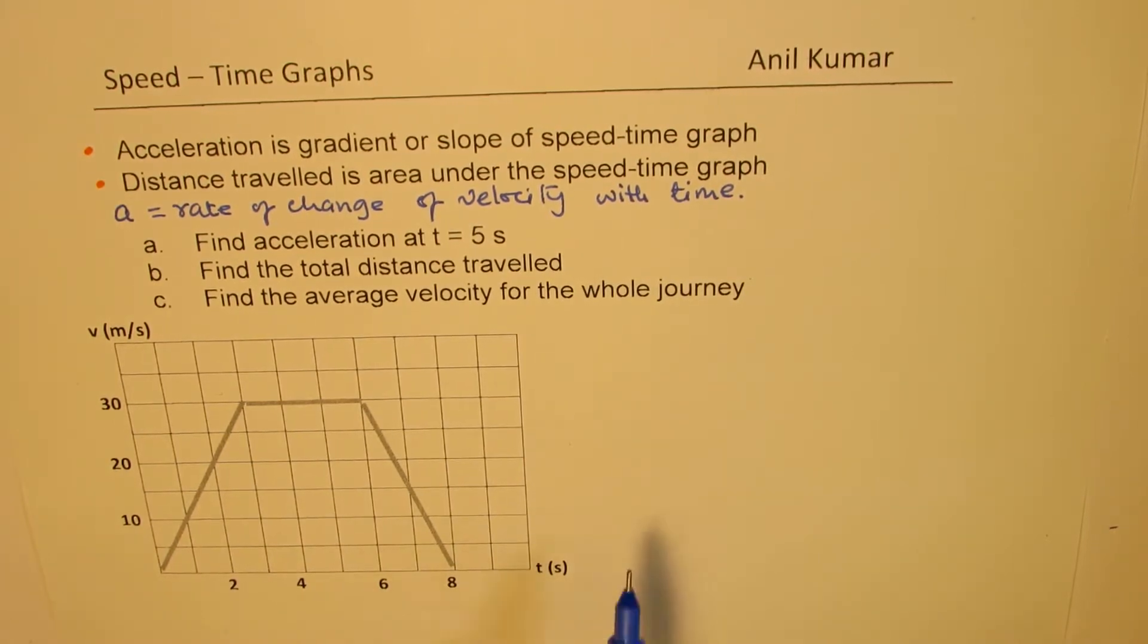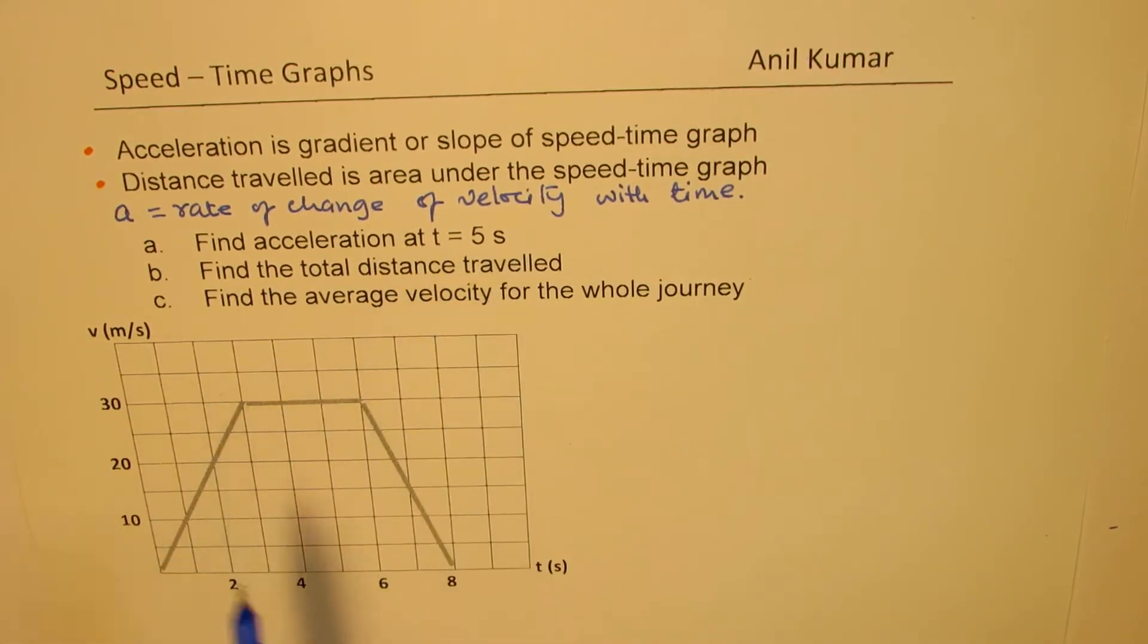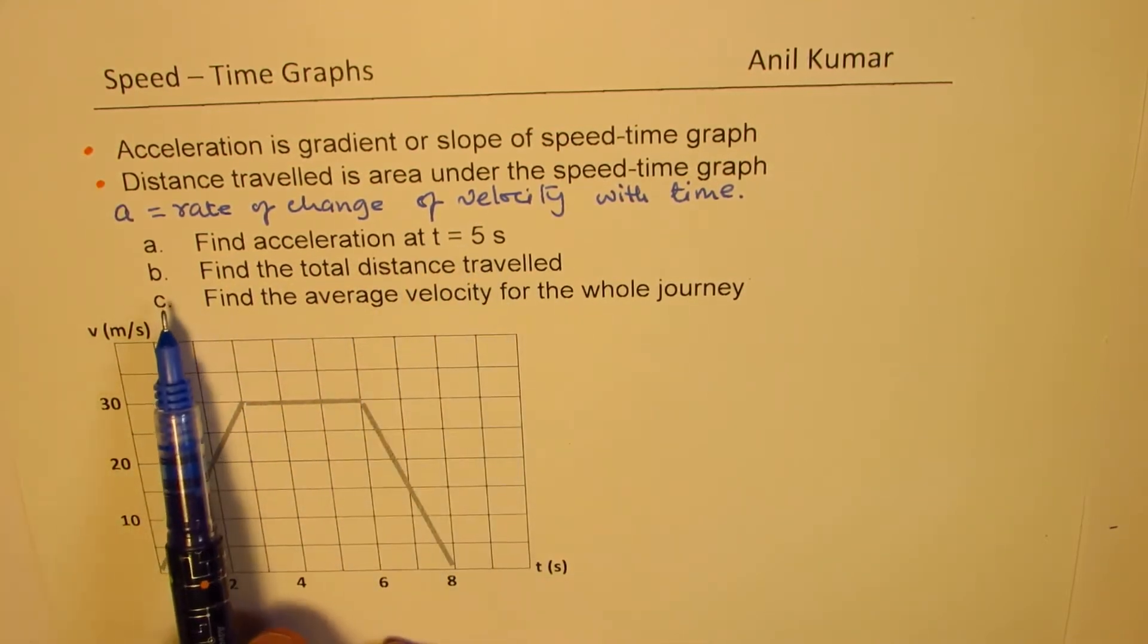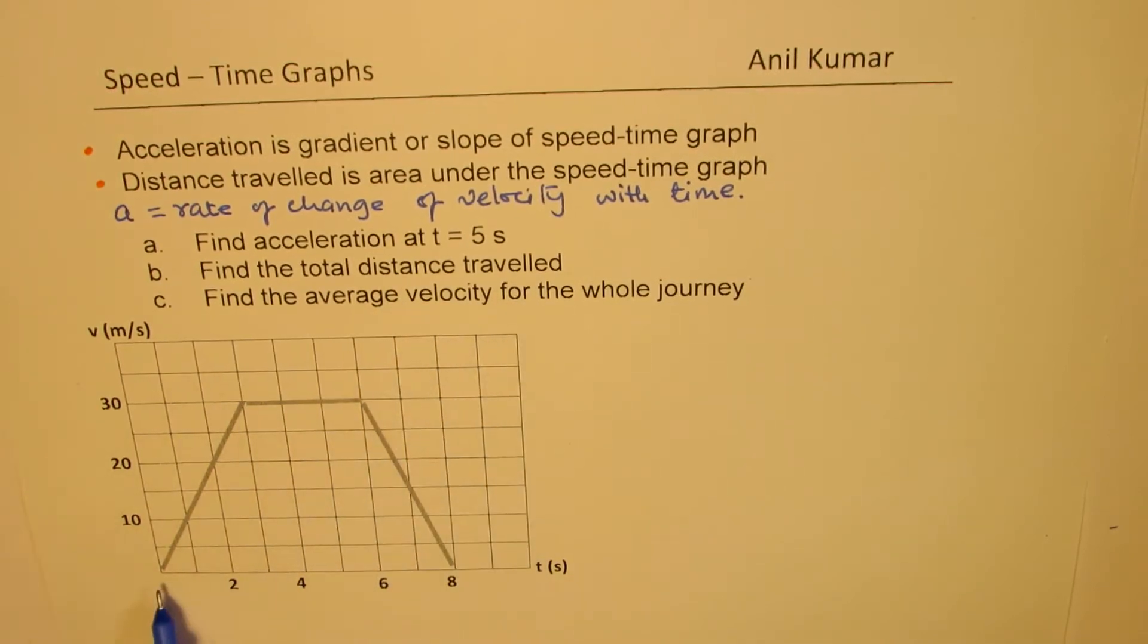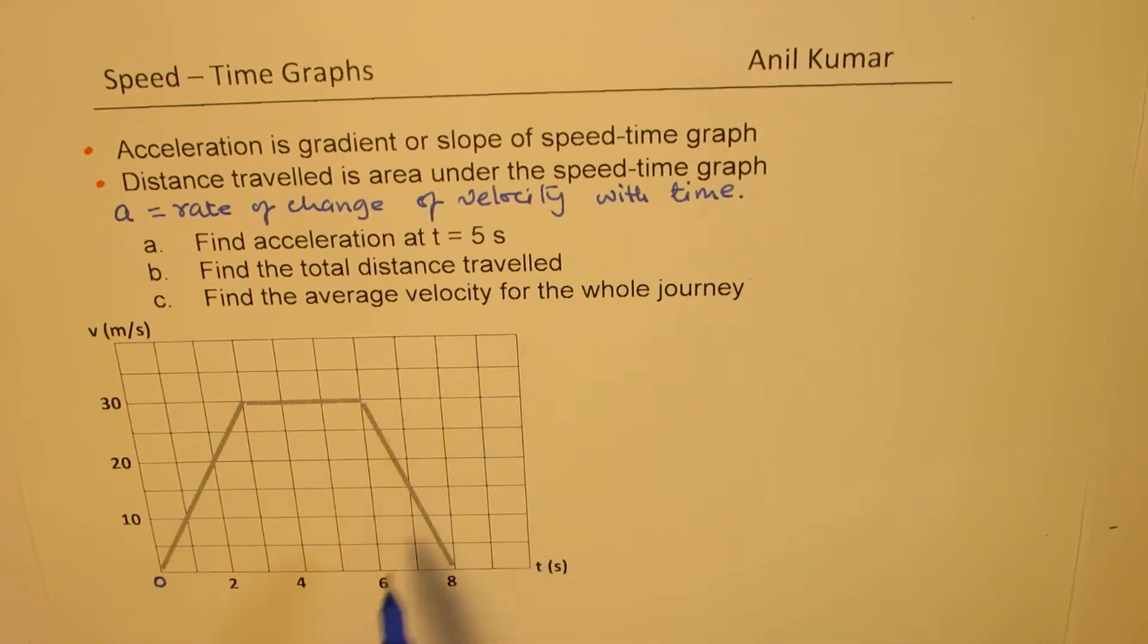Now, the question for you is, find the acceleration at t equals to 5 seconds. This is with respect to the diagram given to us. Velocity is in meters per second. Time is in seconds. So find acceleration at t equals to 5 seconds. And b is, find total distance traveled. That means from 0 to 8 seconds. And the third question here is, part c, find the average velocity for the whole journey. So let's begin answering them.